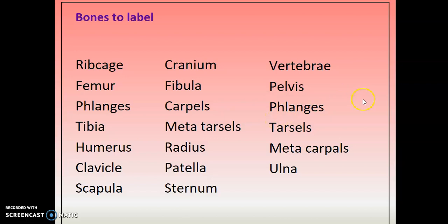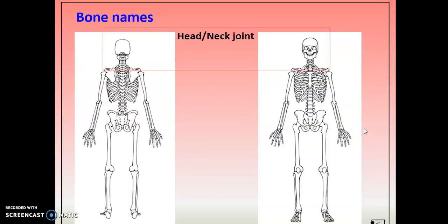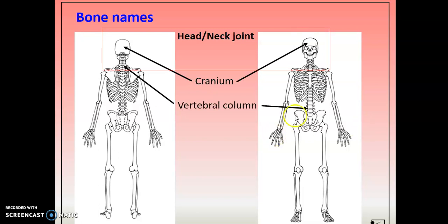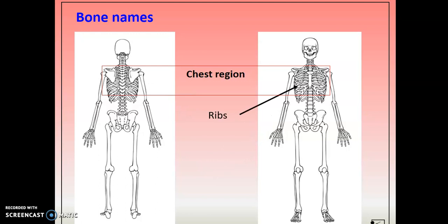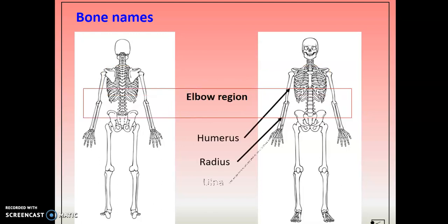On your screen you can see all the bones you need to know. Remember, phalanges are for your fingers and toes. Starting at the top: your skull is otherwise known as your cranium — important for protection, for example in a rugby scrum. Your vertebral column is your spine, made up of smaller bones. You've got your scapula at the back, your humerus as your upper arm bone, your clavicle or collarbone, then your ribs, sternum or breastbone, and your radius and ulna in your lower arm.